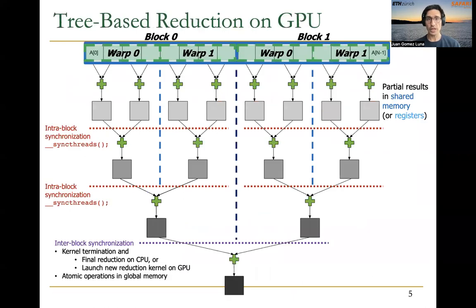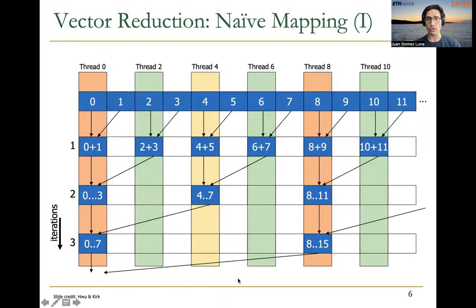We explained how to implement a tree-based reduction on GPU. What we typically do is divide the input array into different chunks that are assigned to different thread blocks, and inside each thread block we assign different parts to different warps. Each warp will obtain a partial reduction result that will be further reduced into a per-block partial result. After some inter-block synchronization, we will end up having the final reduction result.